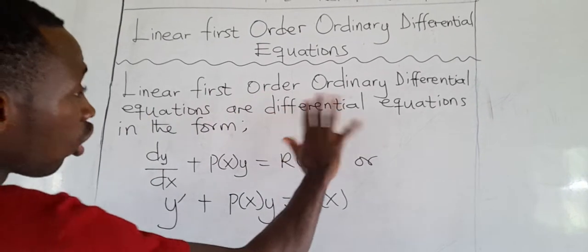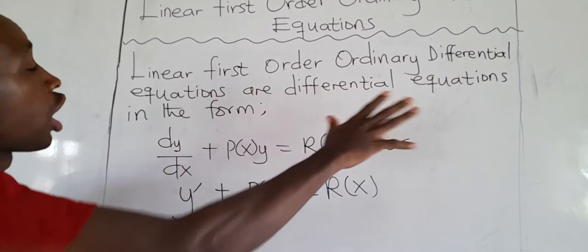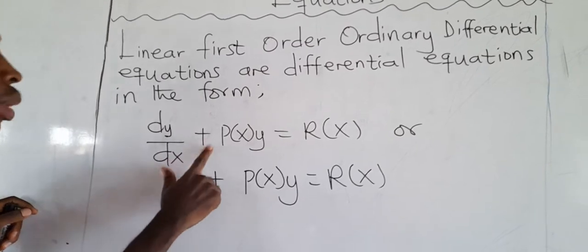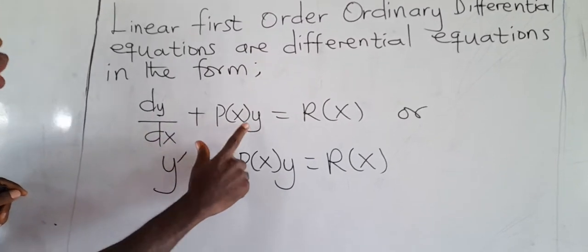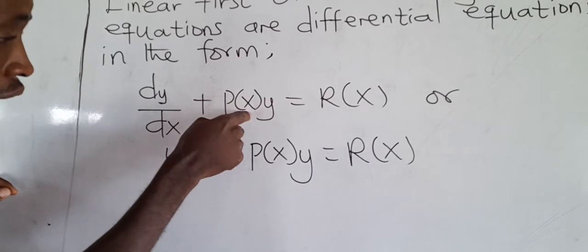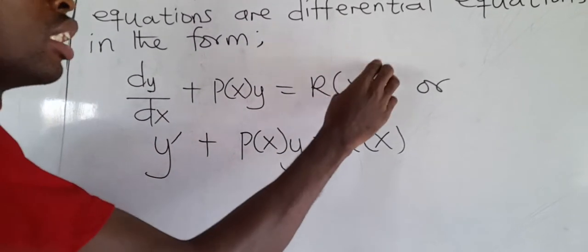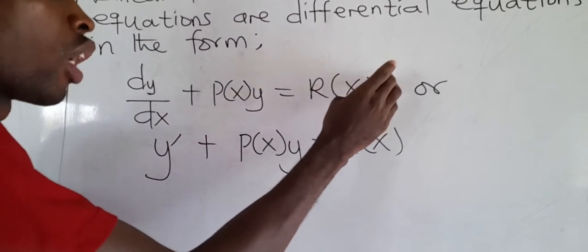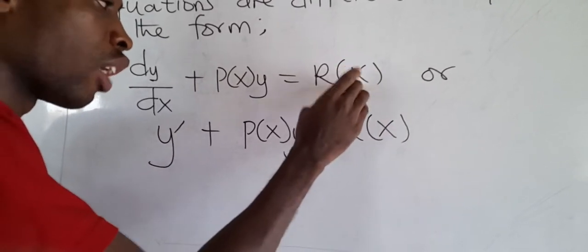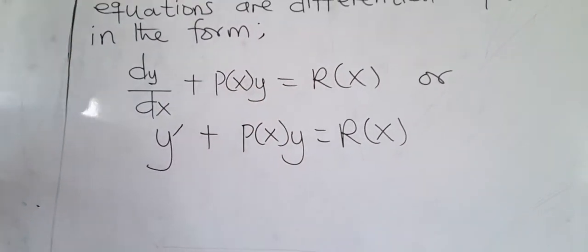Linear first order ordinary differential equations are in this form: dy/dx plus P(x) times y equals another function of x. Please note there is no function of y multiplying the function of x on the right side — take very good notice of it.